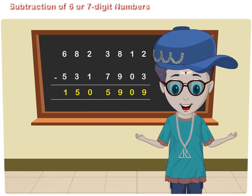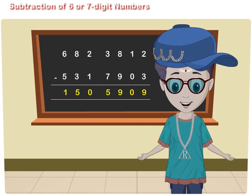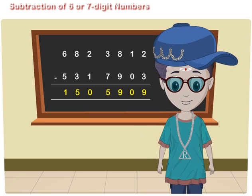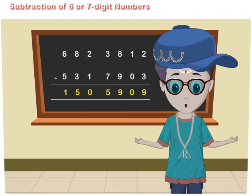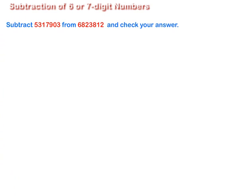Friends, let us now practice subtraction of 6 or 7 digit numbers. Subtract 53,17,903 from 68,23,812 and check your answer.